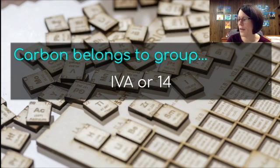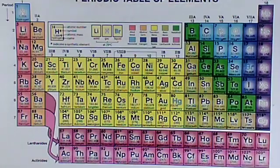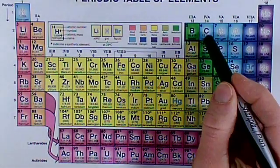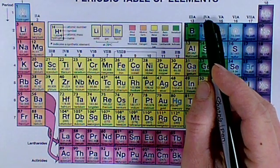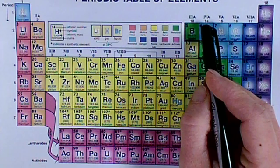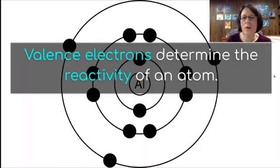One thing I want to take a look at is carbon. Carbon belongs to group 4A or 14 — remember the I's and V's are Roman numerals. So on our periodic table we find carbon, we go up here, and we see it's group 4A or 14, depending on which group numbers you are using.